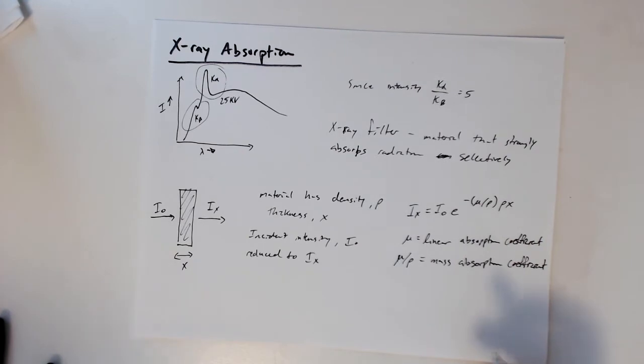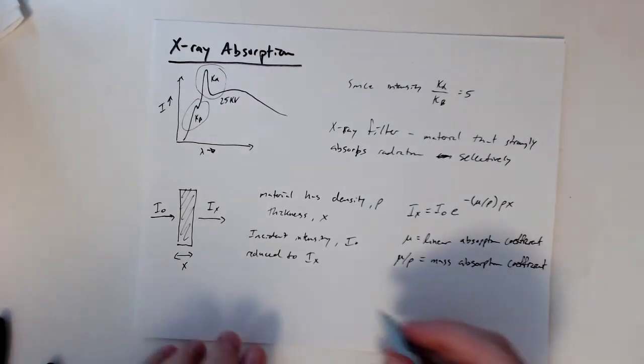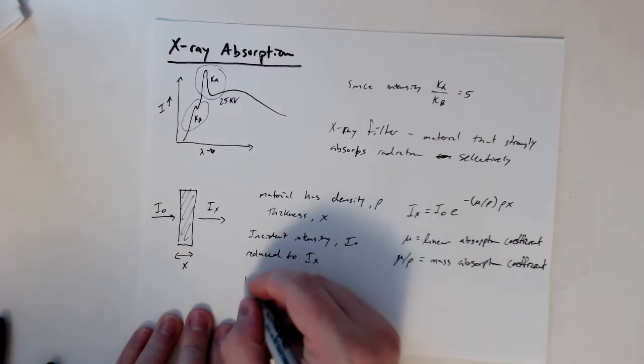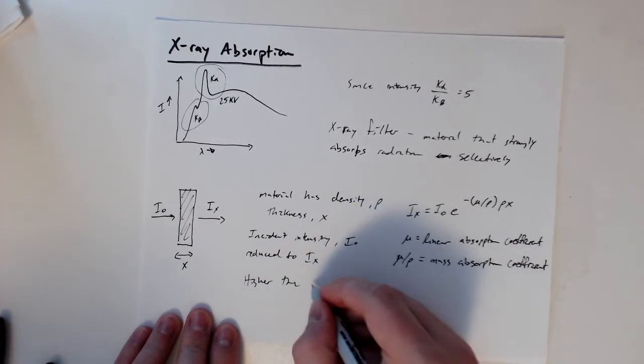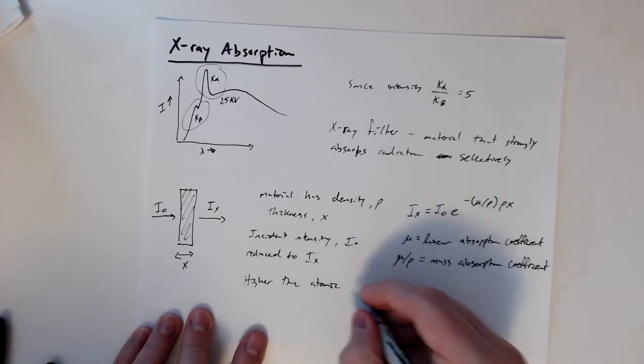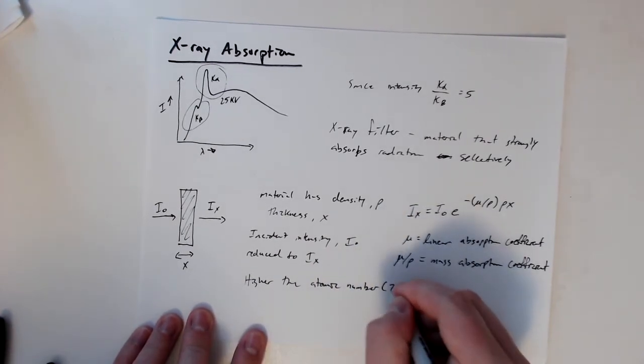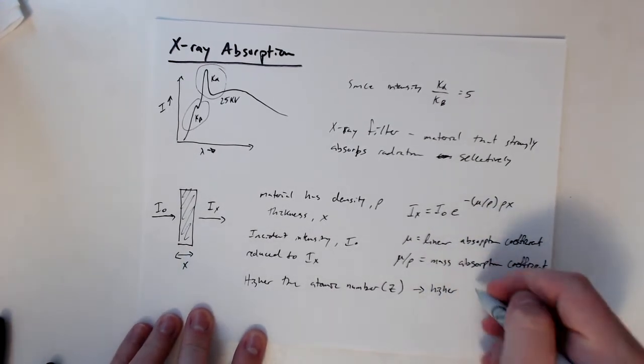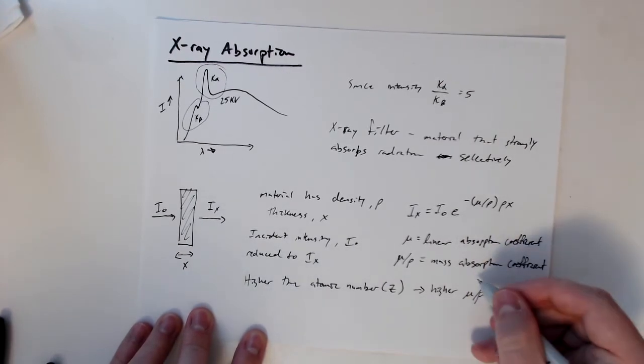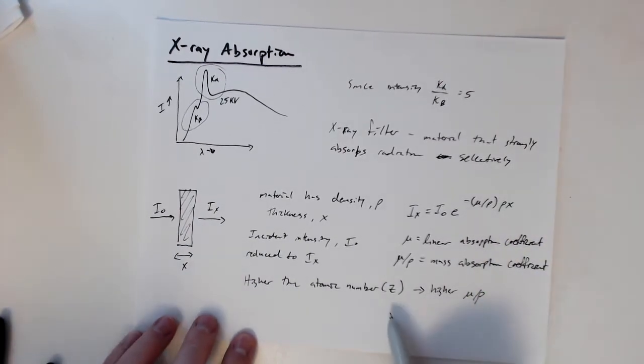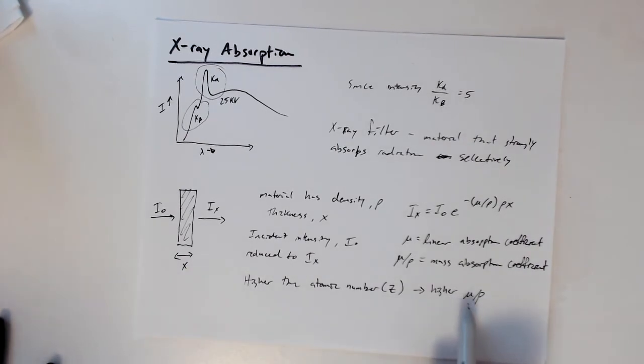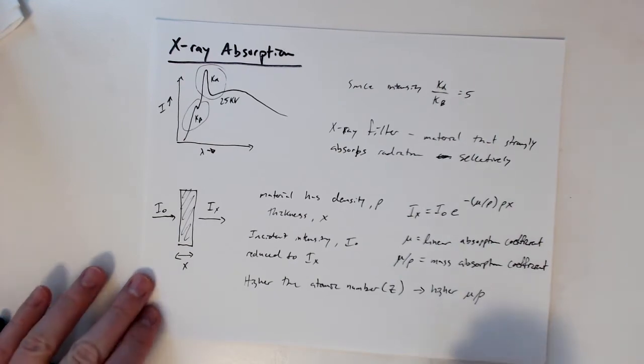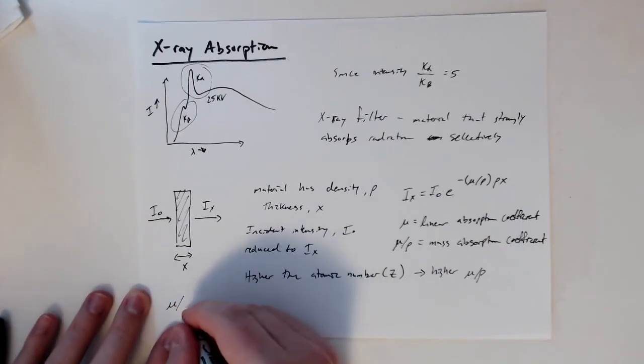Generally speaking, the higher the atomic number of a material, the higher the Z number, leads to a higher μ/ρ mass absorption coefficient. The higher the atomic number, the higher the mass absorption coefficient is.